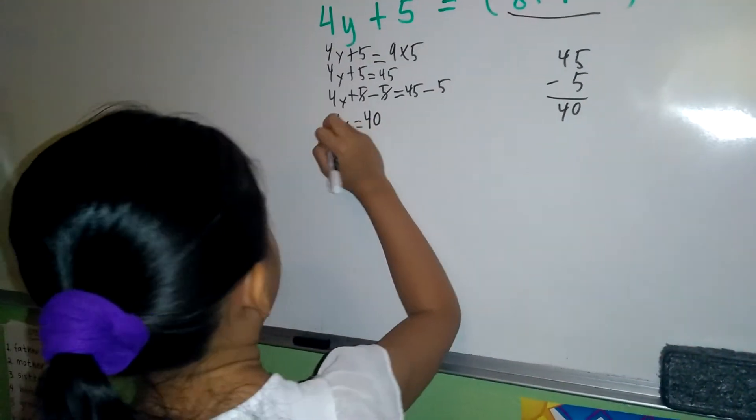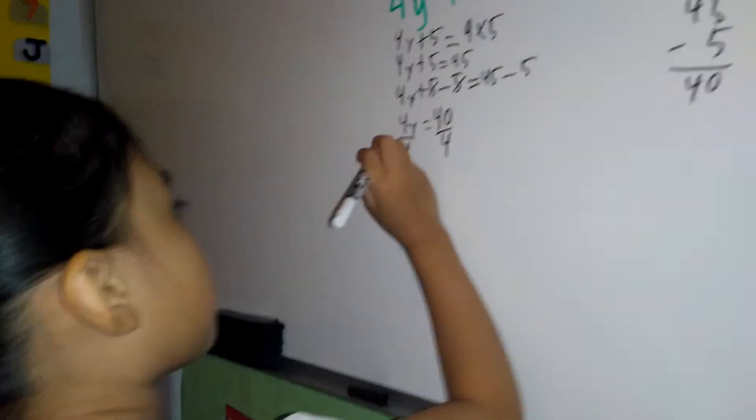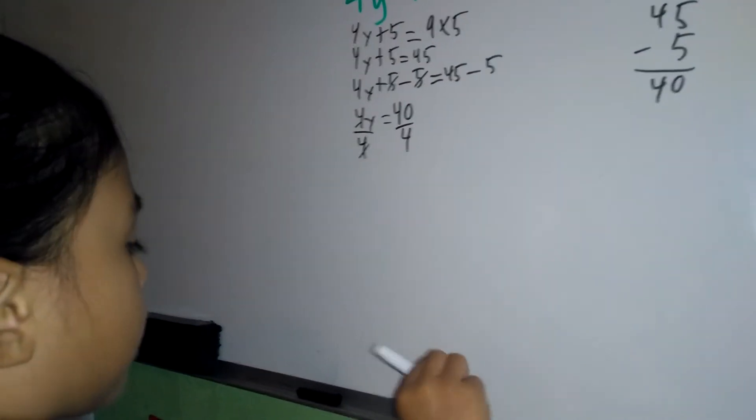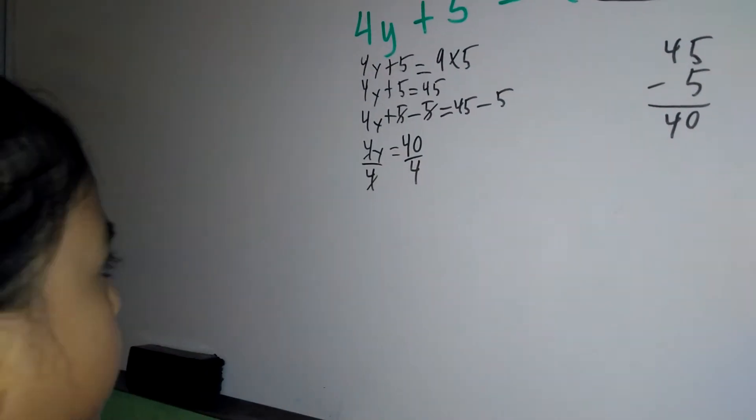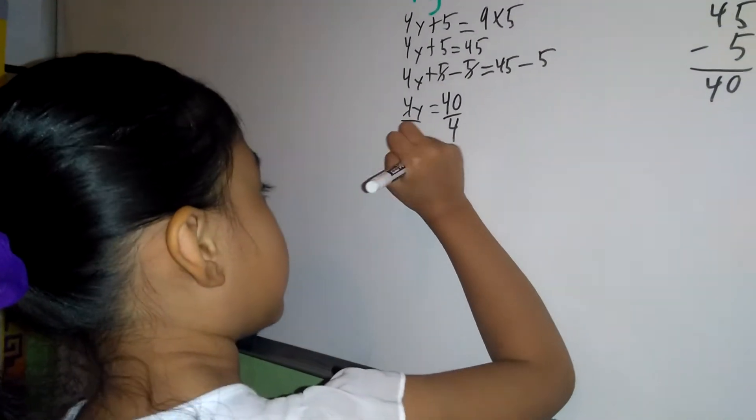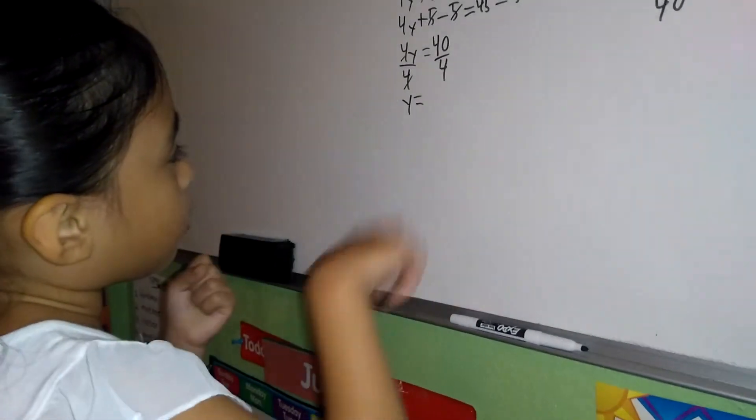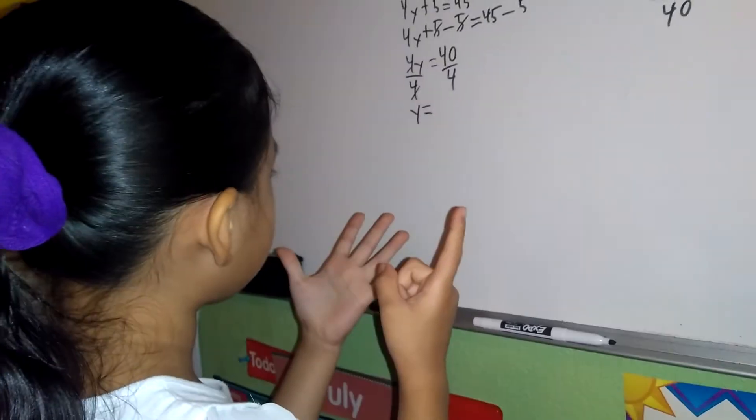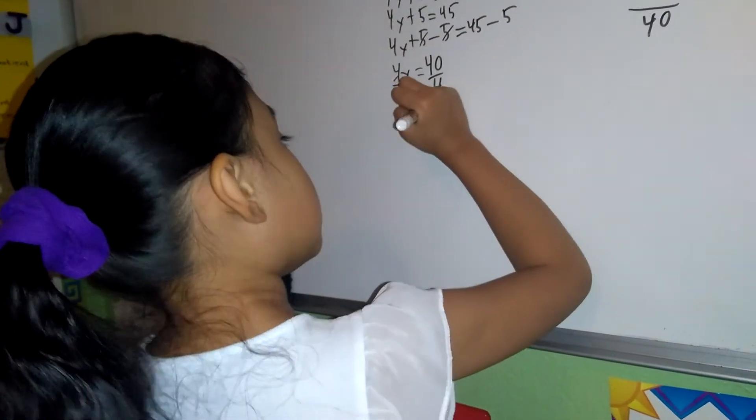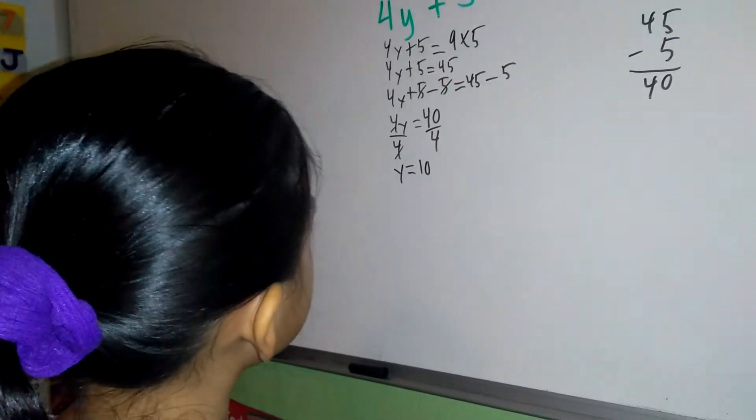To remove 4, divide 4 on both sides. 4y divided by 4 equals cancel, so y is left. 40 divided by 4 equals 10. y equals 10.